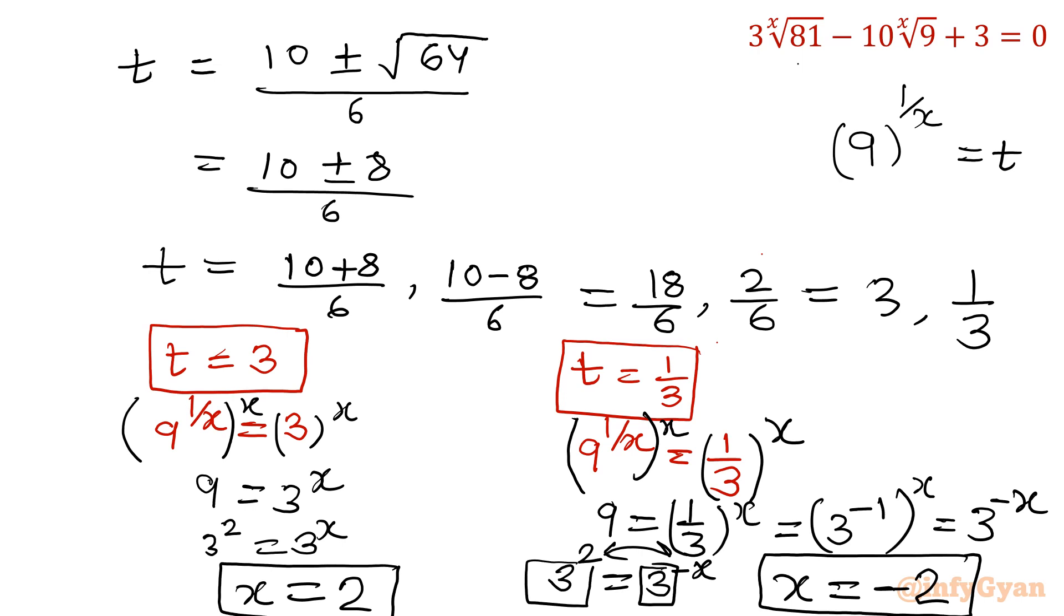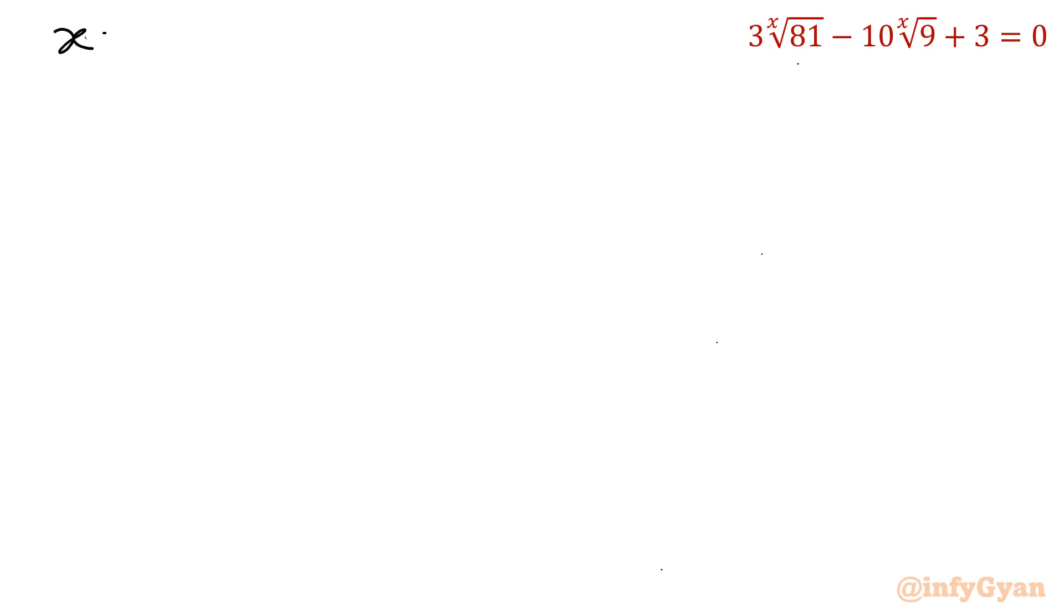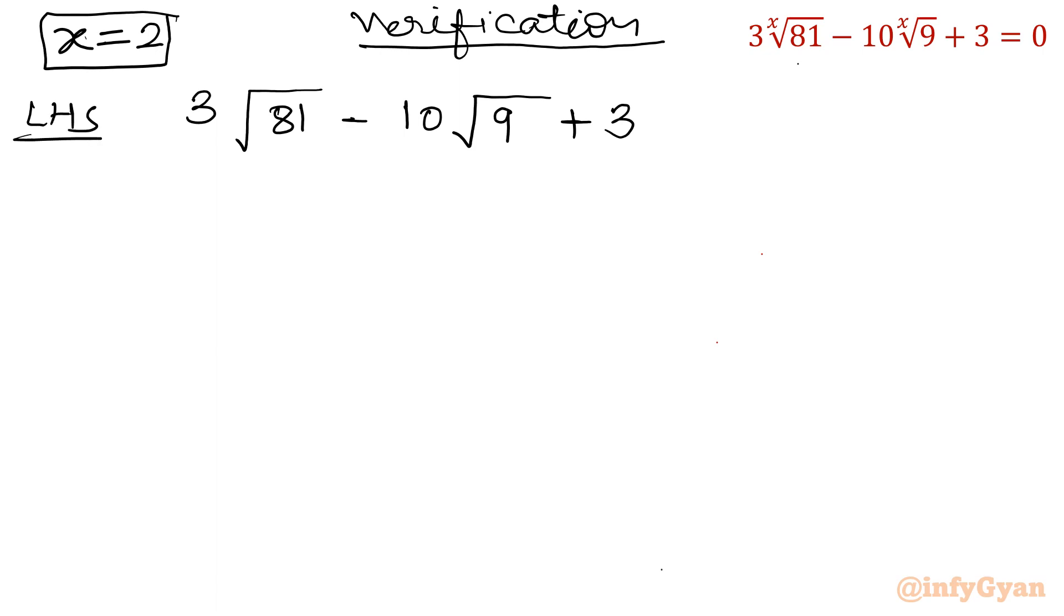Now let's verify both values. First, x is equal to 2. Verification: 3 times square root of 81 minus 10 times square root of 9 plus 3. So 3 times 9 minus 10 times 3 plus 3. That's 27 minus 30 plus 3, which is 0, which is equal to RHS. Hence verified.